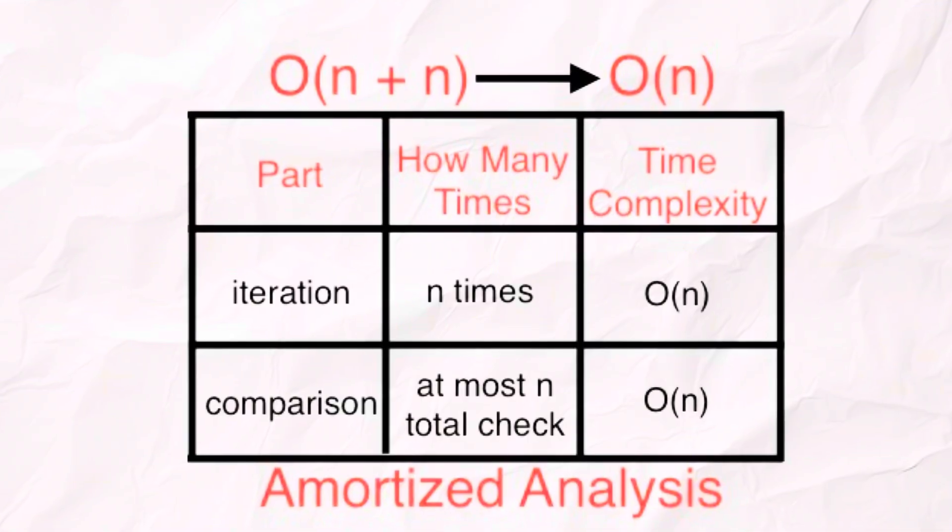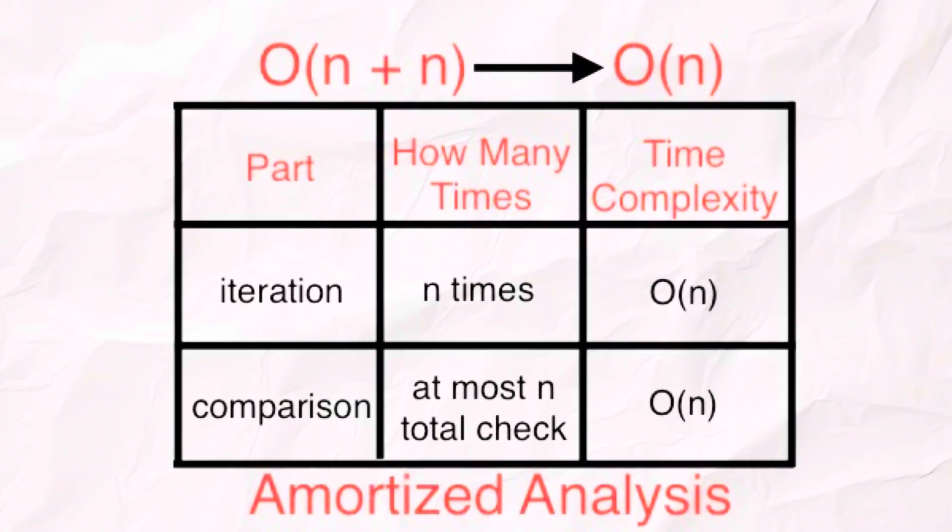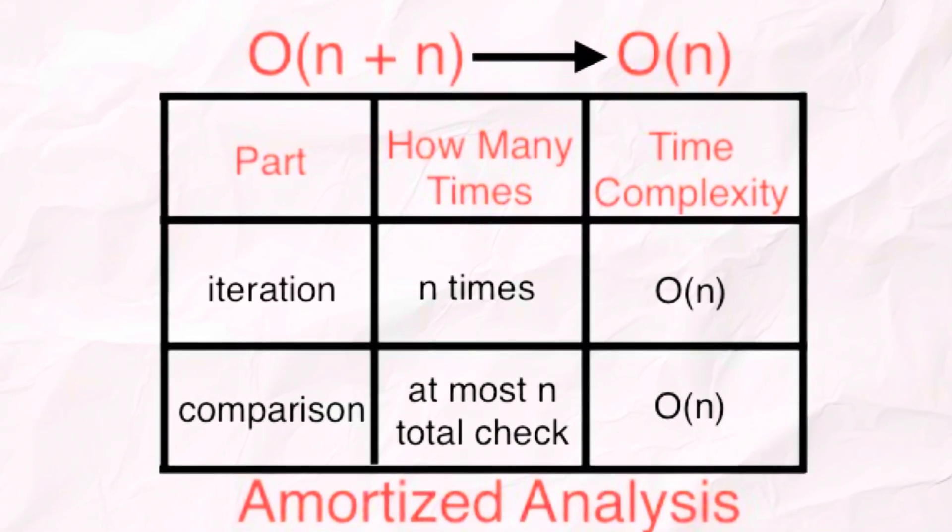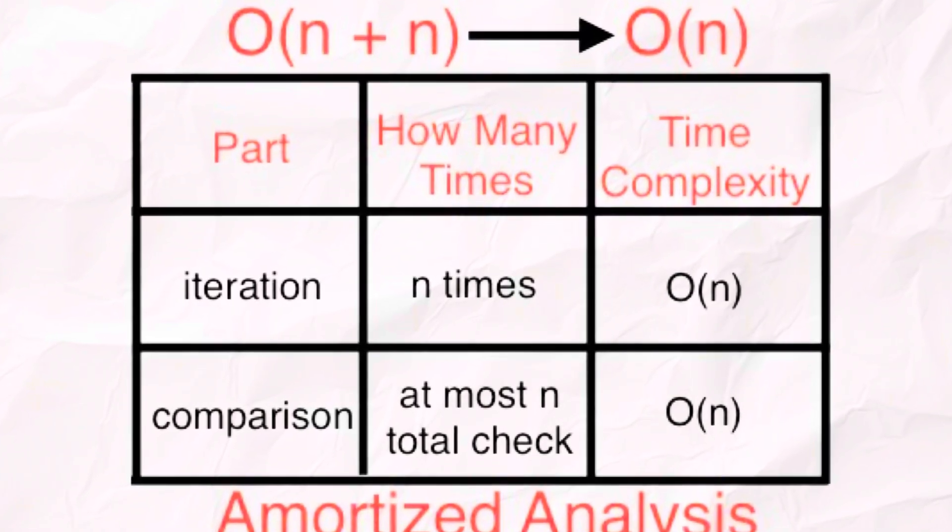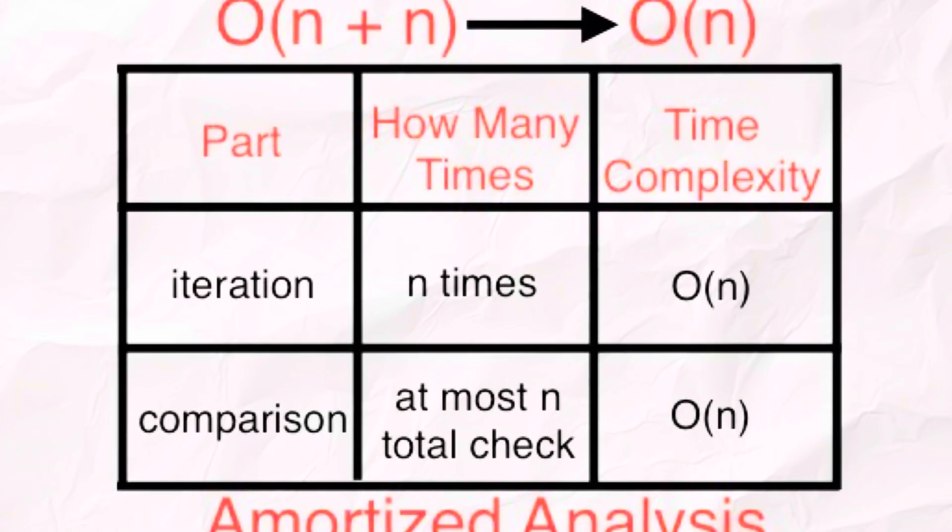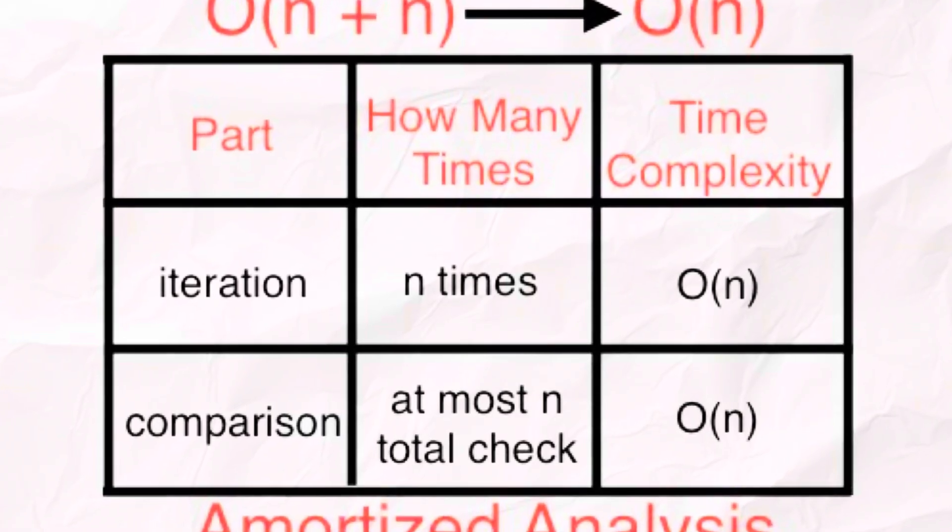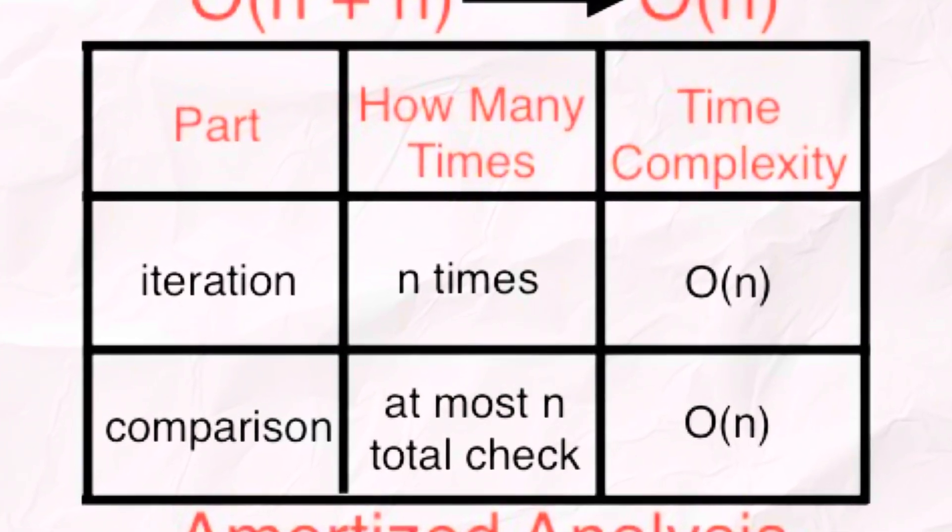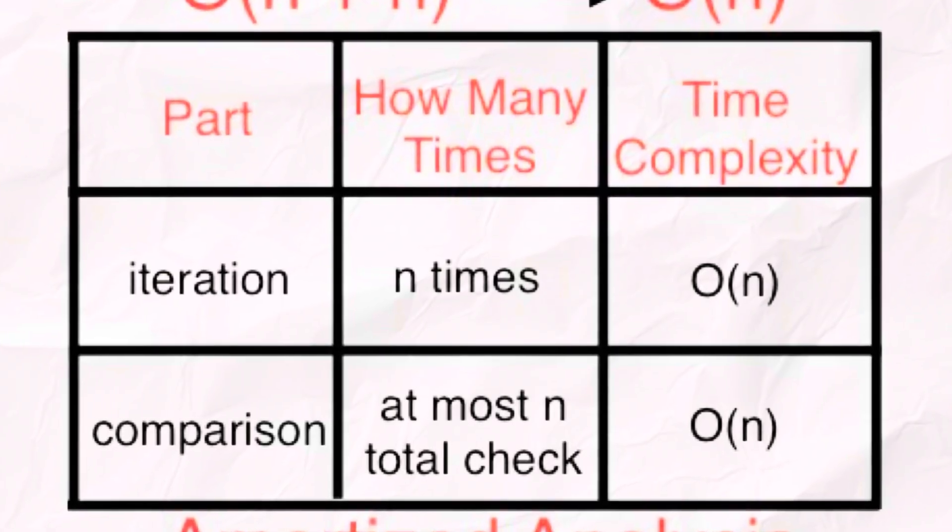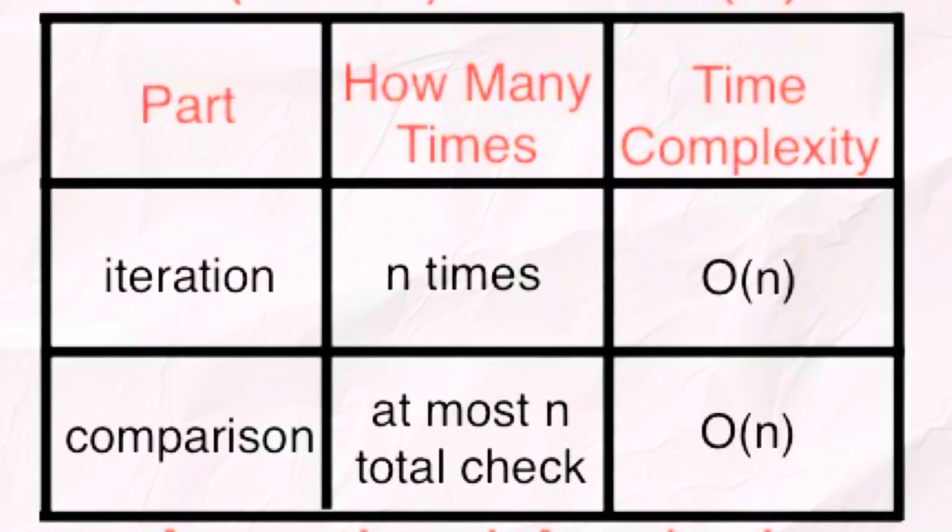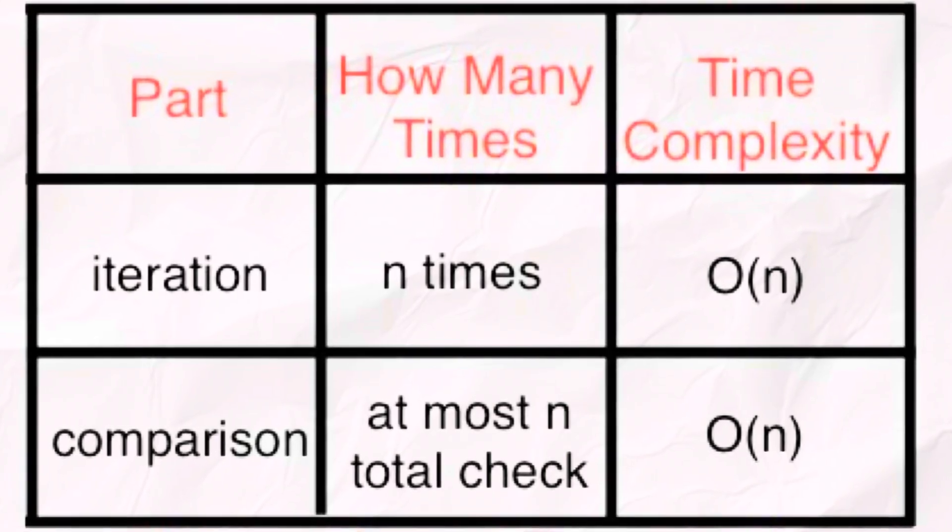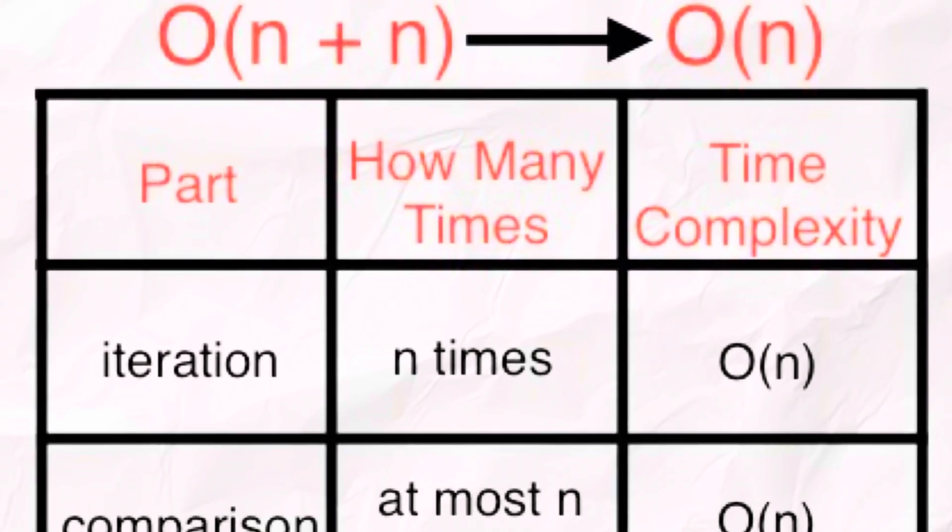Now let's talk about time complexity. At first glance, we are checking multiple characters for each center. Looks like O(n squared) time, right? But the trick is we never recheck the same pair of characters more than once. That's the key. Each expansion either increases the right boundary r or it stops. And r can only move forward through the string, never back.